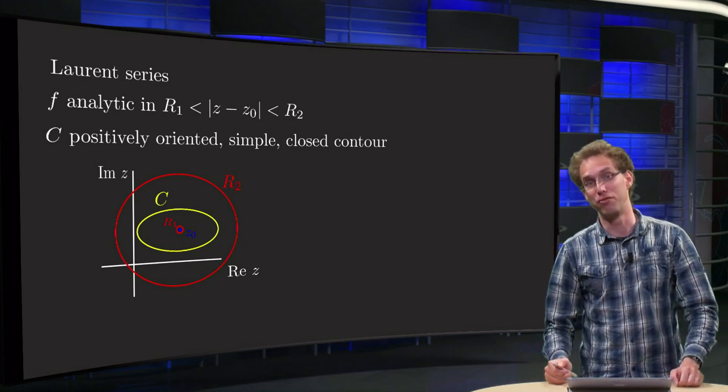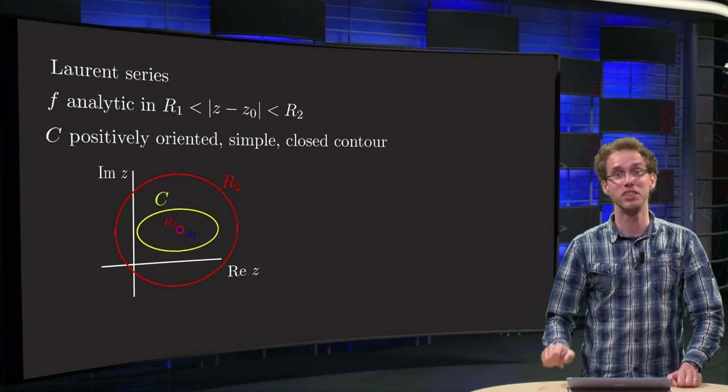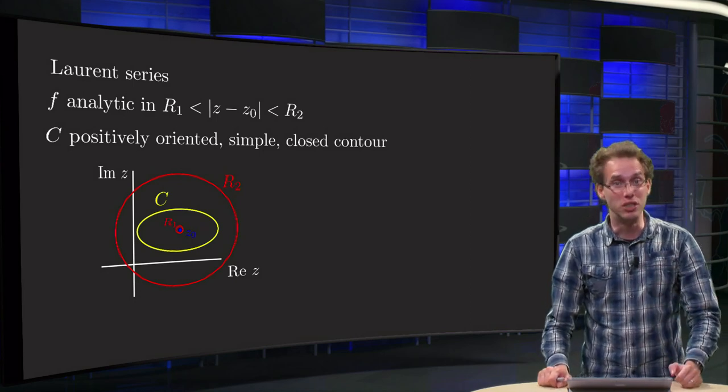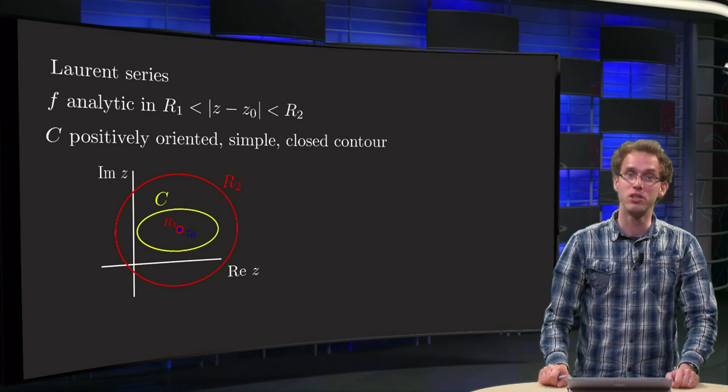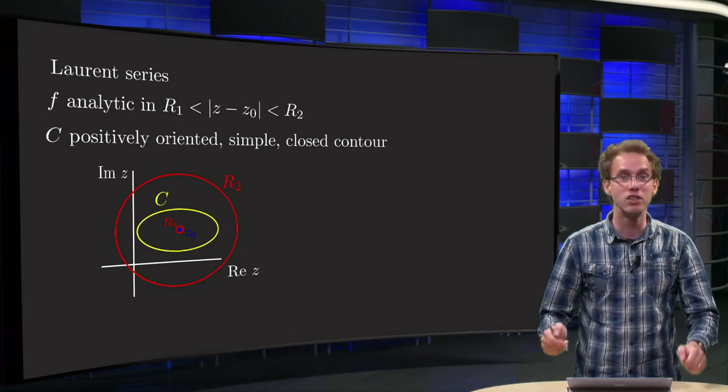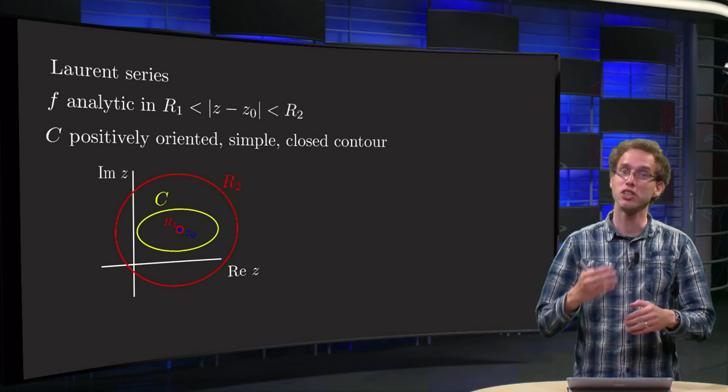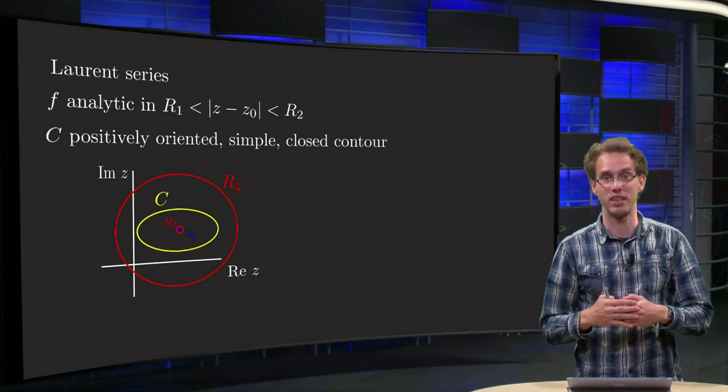You know the Taylor series of functions, and that is sufficient if your function is analytic. If your function is not analytic at a couple of points, so only analytic in some angles, you will need a series containing also negative powers. Such a series is called the Laurent series.